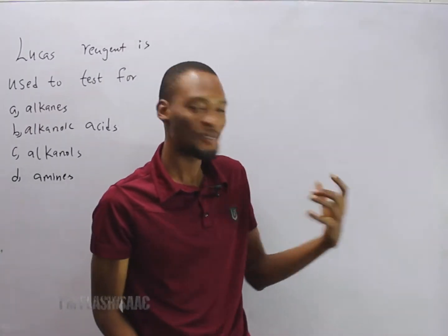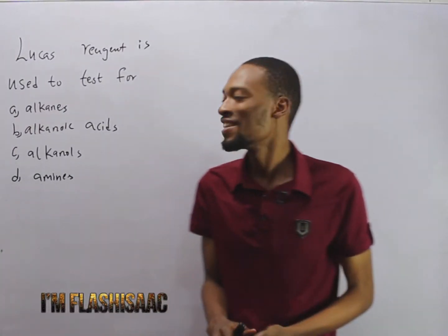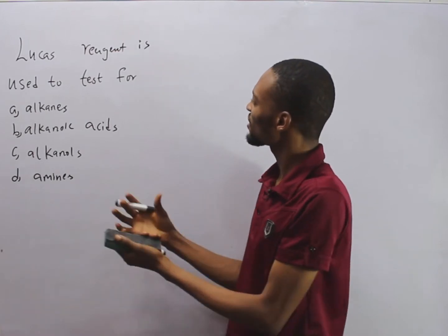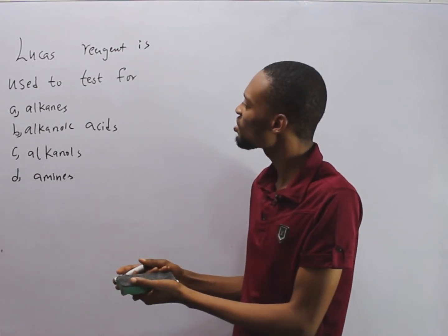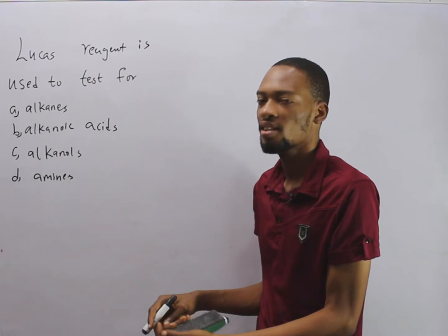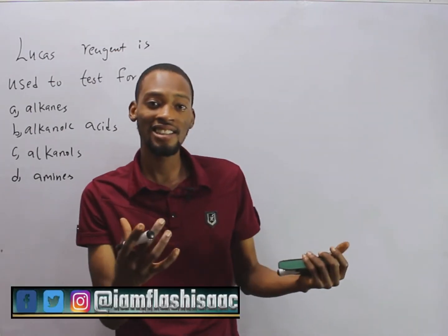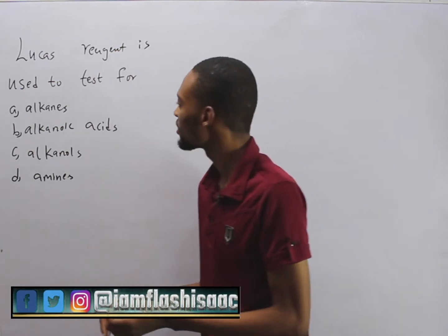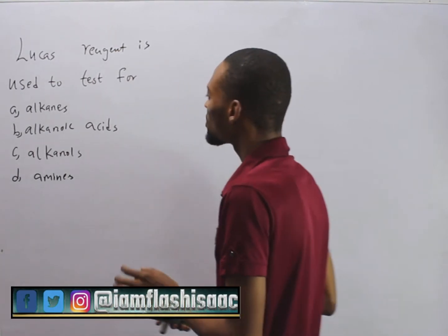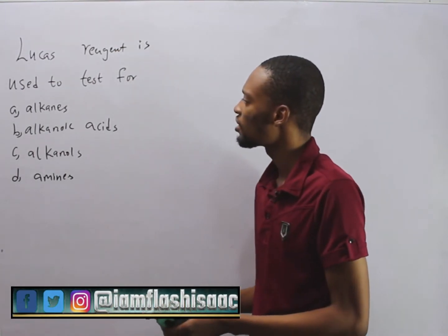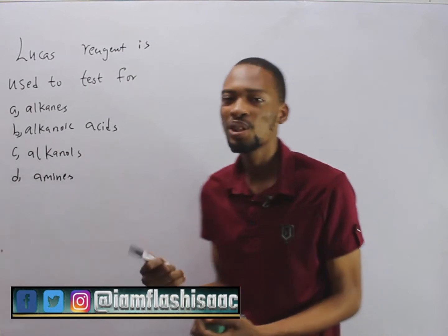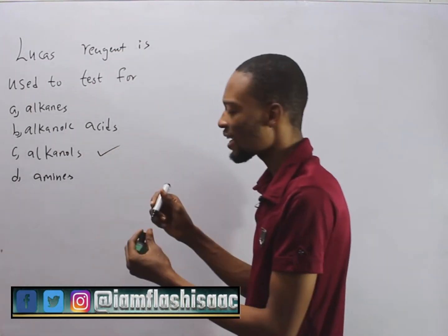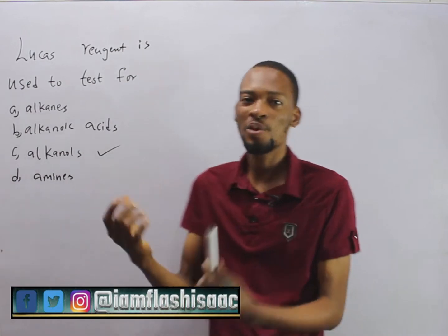Welcome to chemistry class with Flash Isaac. Let's attempt this question. Lucas reagent is used to test for alcohols. Lucas reagent is a solution of concentrated zinc chloride in hydrochloric acid, and it is used to test for alcohols, also referred to as alkanols.